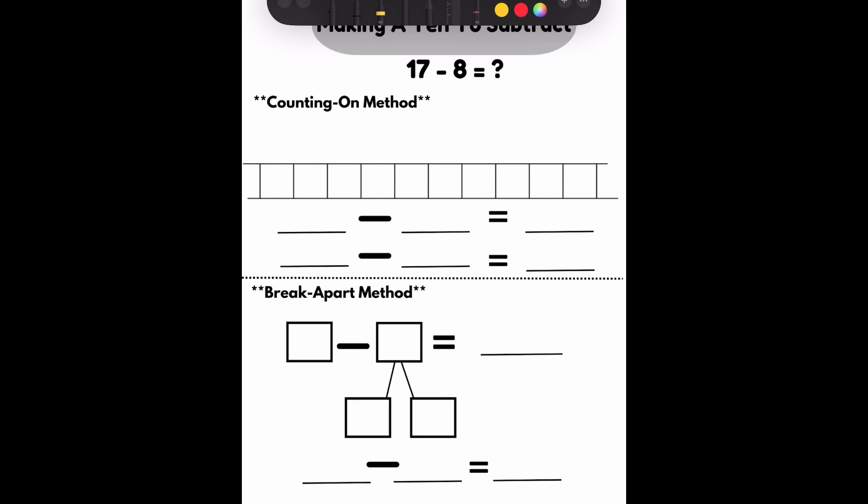Counting on, almost just like an open number line. I need to end at 17 and work my way backwards because I'm subtracting. I start at 17. I need to make 10.